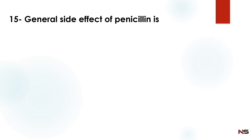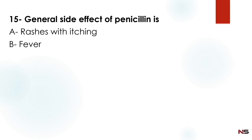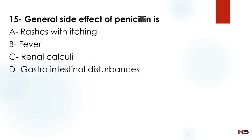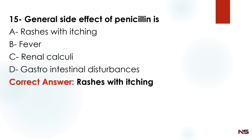Next question: The general side effect of penicillin is — Option A: rashes with itching. Option B: fever. Option C: renal calculi. Option D: gastrointestinal disturbances. The correct answer is Option A — rashes with itching.